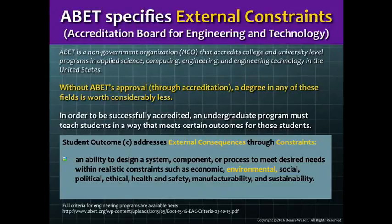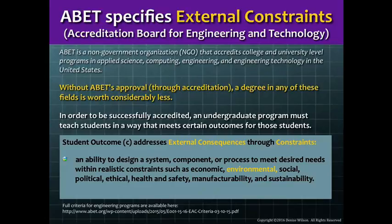At first glance, the organization that oversees accreditation and quality of engineering programs in the United States, ABET, does not seem to address these environmental consequences. But another look at Outcome C for engineering undergraduate students shows us that engineering students should indeed be exposed to environmental consequences of their profession through the issue of sustainability. A significant part of sustainable engineering design involves reducing impacts and consequences of technology to the environment, and it is this high-profile pillar of sustainability that we address in this introduction and subsequent sessions on environmental consequences.